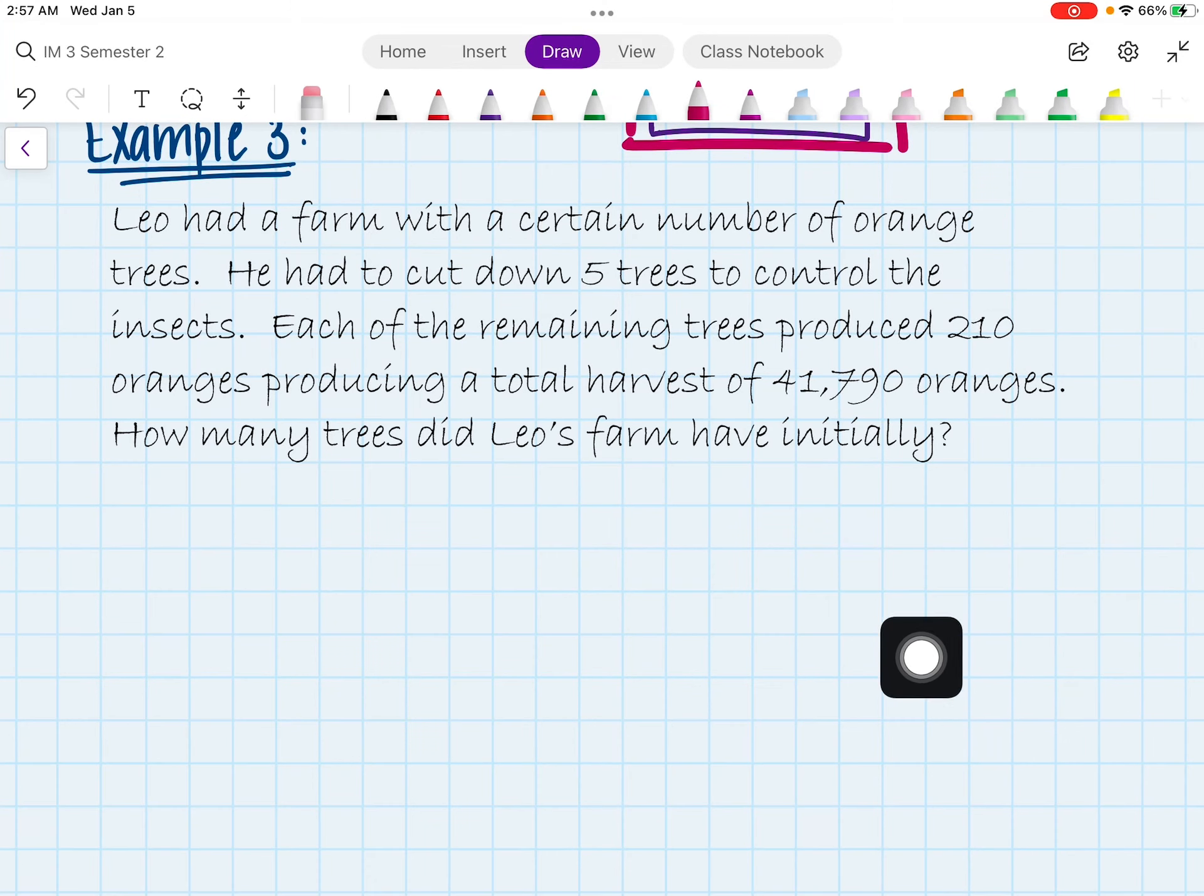All right, you guys, let's go ahead and take a look at this last example here. In this example, it says Leo had a farm with a certain number of orange trees. He had to cut down five trees to control the insects. Each of the remaining trees produced 210 oranges, producing a total harvest of 41,790 oranges. How many trees did Leo's farm have initially?